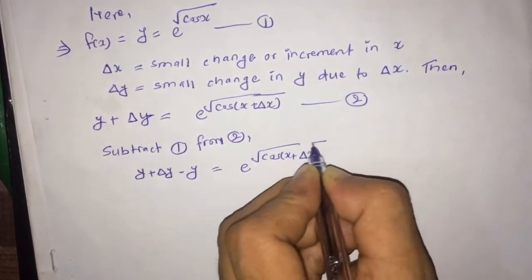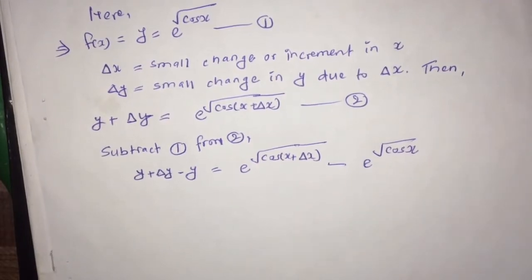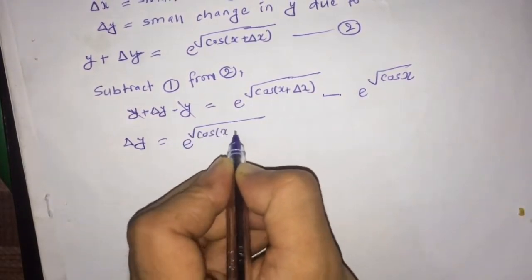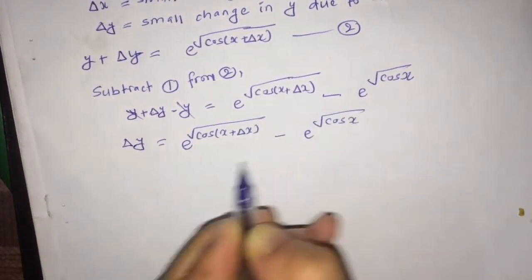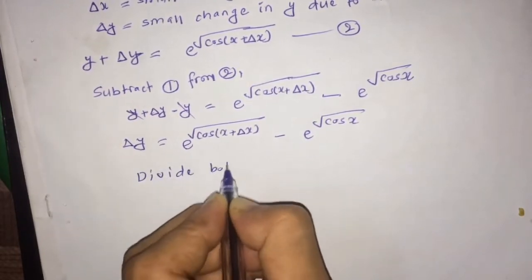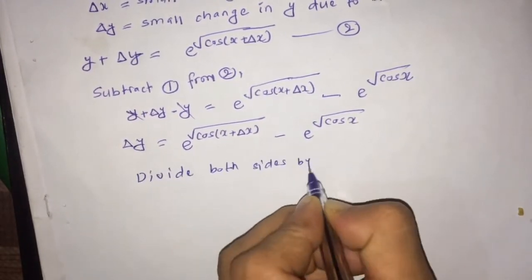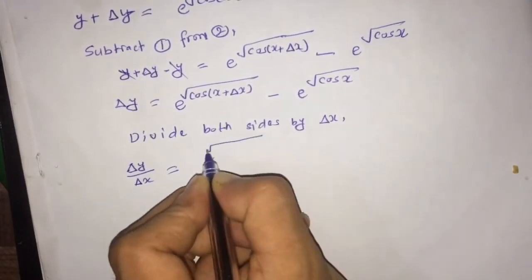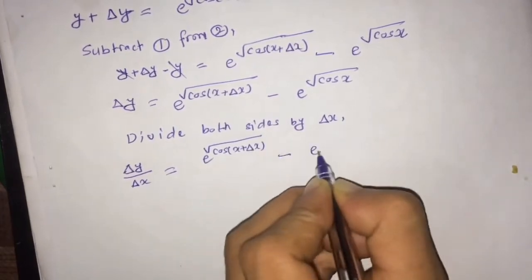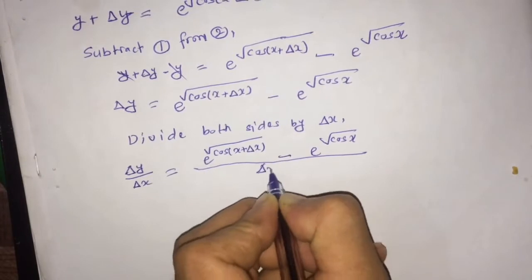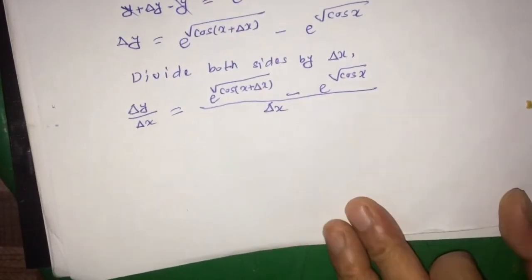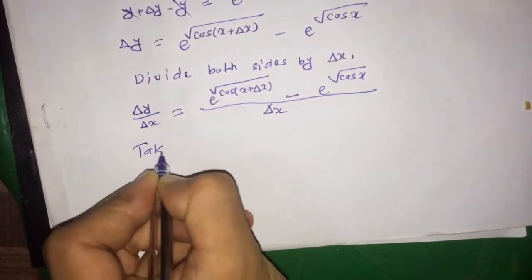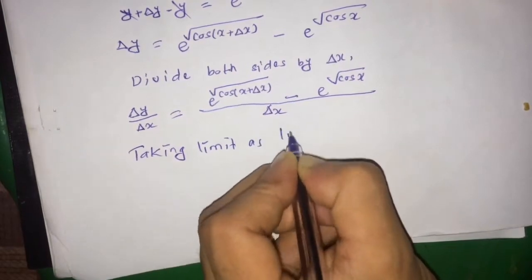Now subtract equation 1 from equation 2. You will get y + δy minus y; y cancels out, then δy is equal to exponential root under cos(x + δx) minus exponential root under cos x. Divide both sides by δx, then you get δy/δx equal to exponential root under cos(x + δx) minus exponential root under cos x, whole divided by δx.